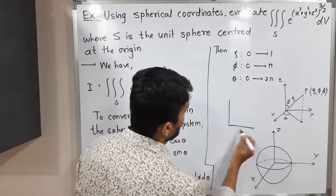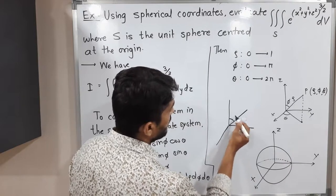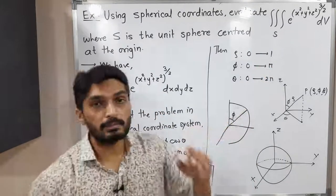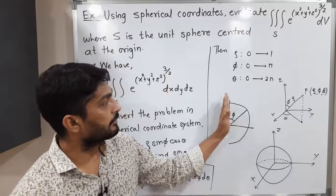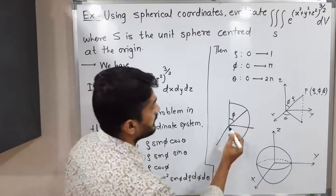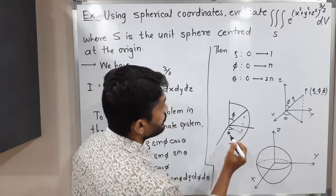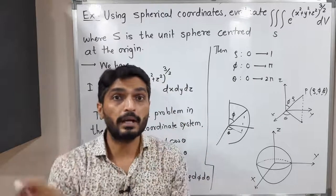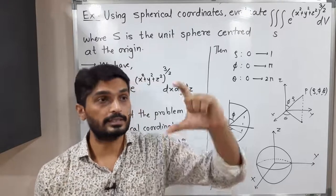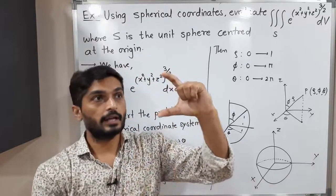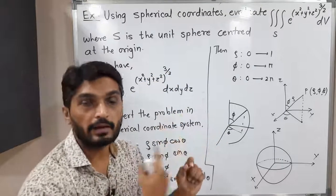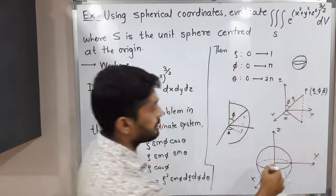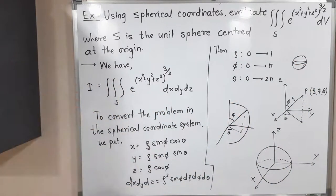When φ varies from 0 to π, that means 0 to 180 degrees, we get a half circle. Then θ varies from 0 to 2π, giving 360 degrees of rotation. If you take a half circle and rotate it by 360 degrees, you get a complete sphere. So these are the limits we have.